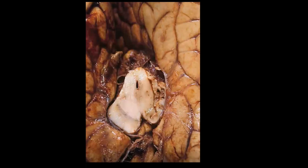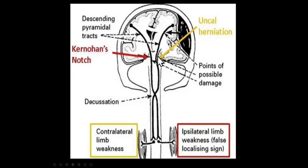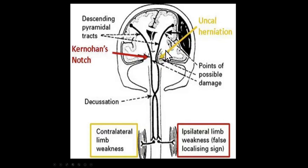There is another process called Kernohan's notch phenomenon. Typically in uncal herniation, you get an ipsilateral third nerve palsy and contralateral hemiplegia. But if the contents of the midbrain get pushed over to compress the opposite cerebellar tentorium — Kernohan's notch — you may compress the opposite cerebral peduncle and get an ipsilateral hemiplegia instead. This is a false localizing sign, because you'd normally expect the lesion to be on the opposite side from the hemiplegia.